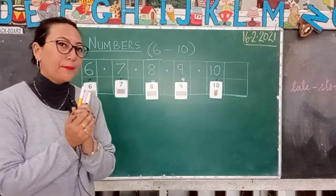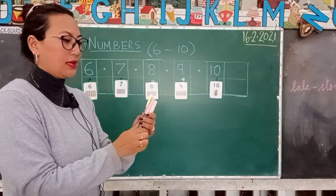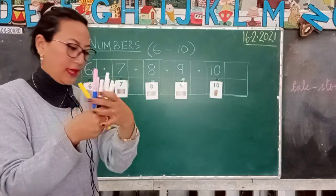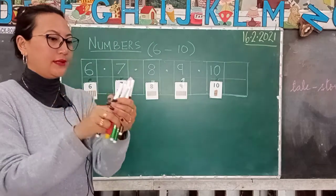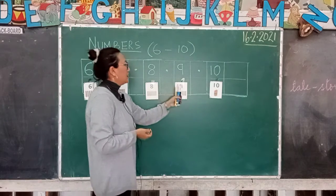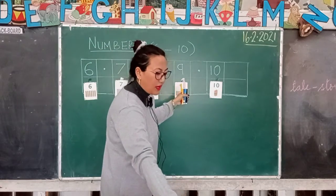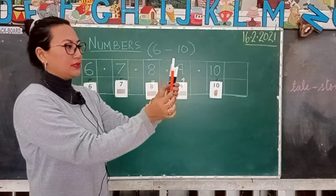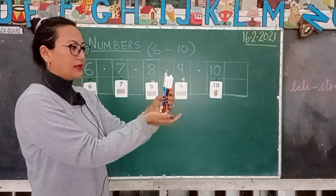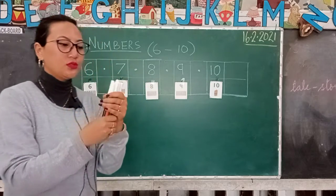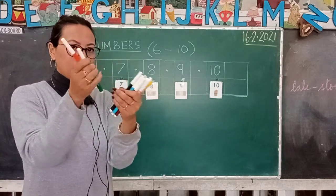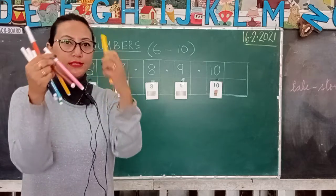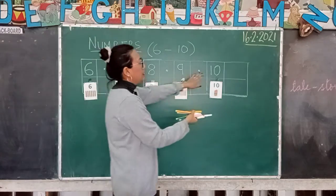After 8 comes number 9. Let's count again: one, two, three, four, five, six, seven, eight — eight plus one is nine. Number 9. After nine comes which number? Number 10! So I add one more pencil: nine plus one is ten. How many pencils in total? One, two, three, four, five, six, seven, eight, nine, ten — number 10.